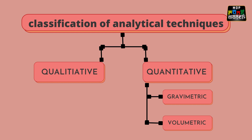One of the most important reasons for analyzing food is to check if it is safe for consumption. The analytical techniques used are broadly classified into two types: qualitative analysis and quantitative analysis. Under qualitative analysis, the various constituents of a substance and the manner in which they are combined are identified. Under quantitative analysis, methods of determining the relative proportions of the constituents are used, and it can be further classified into gravimetric analysis — where the mass of the product determines the quality of the original substance — and volumetric analysis, where the volume of the reagent needed to react with the substance being analyzed is measured.